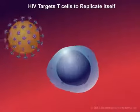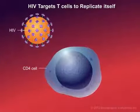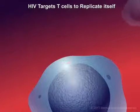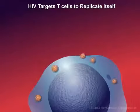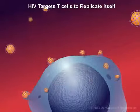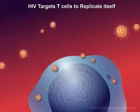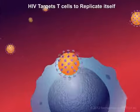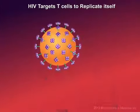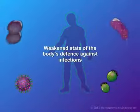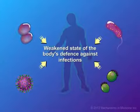When HIV infection occurs, the virus targets these cells of the immune system. The virus attaches and gains entry into the CD4 cell and replicates itself, or makes copies of itself. During this process, infected CD4 cells die, and the HIV virus seeks out other CD4 cells to infect. The body is left in a weakened state of defense against infections and is susceptible to diseases.